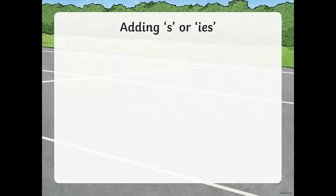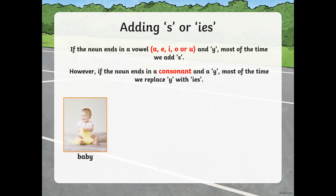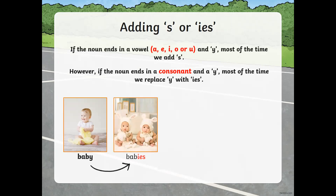Adding IES: whenever a noun ends with a consonant and a Y, most of the time we replace the Y with I and add ES — making I-E-S. Like the word 'baby' — it ends in Y with the consonant B in front of it, so in plural it becomes 'babies.' But there is an exception: when the noun ends in a vowel — A, E, I, O, or U — and a Y, most of the time we only add an S.